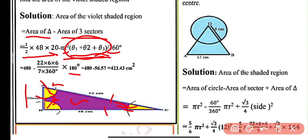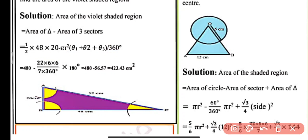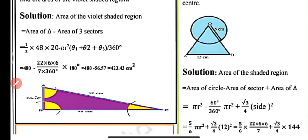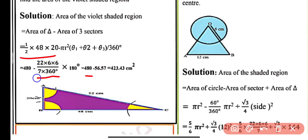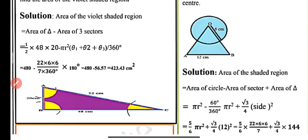So we get 180/360 × π × r², where π = 22/7 and r = 6 cm, giving 6 × 6. After simplifying, the triangle area gives 480 and the sectors area gives 56.57. Subtracting, we get 423.43 cm² as the area of the shaded region.